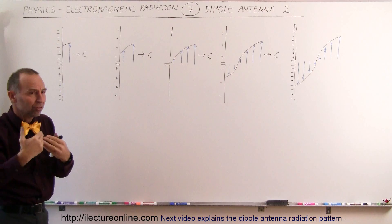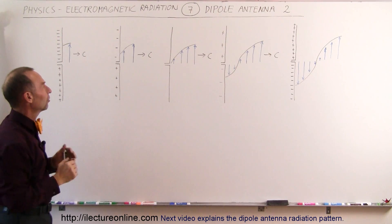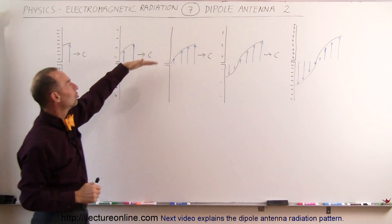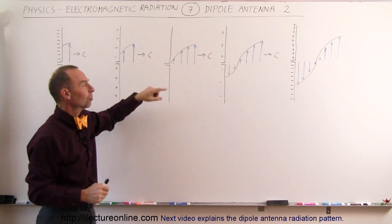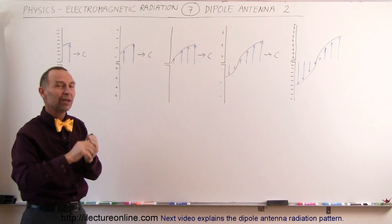Again, that's the disturbance in the electric field, that disturbance continues to move outward at the speed of light. Eventually there's no charge neither at the top or the bottom, so the electric field goes to zero at that moment.